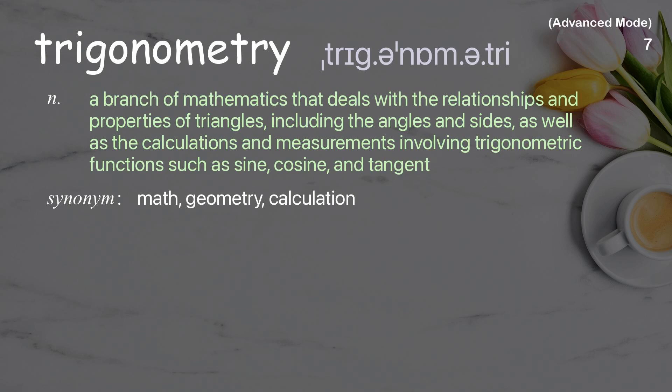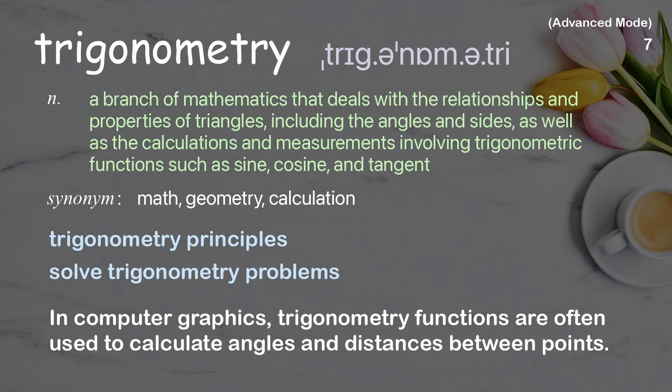Trigonometry: a branch of mathematics that deals with the relationships and properties of triangles, including the angles and sides, as well as calculations and measurements involving trigonometric functions such as sine, cosine, and tangent. Examples: trigonometry principles, solve trigonometry problems. In computer graphics, trigonometry functions are often used to calculate angles and distances between points.